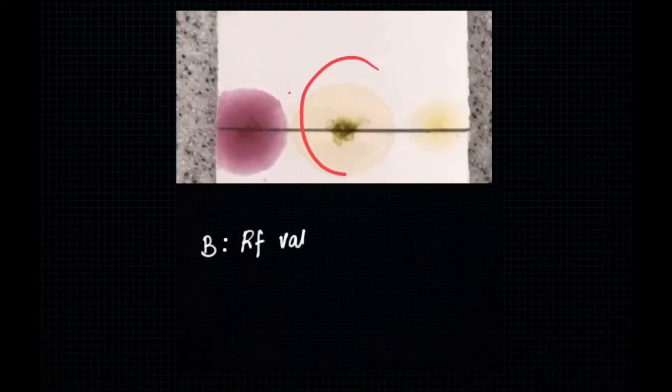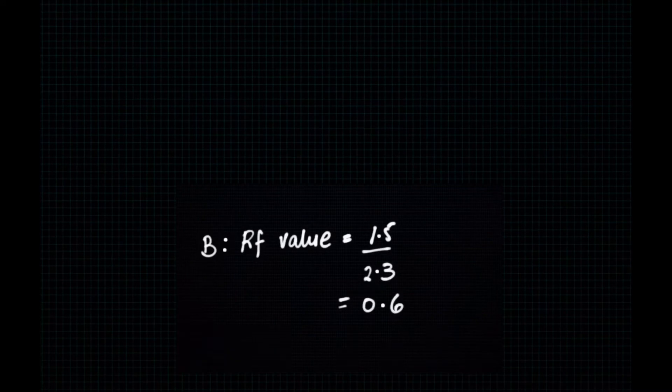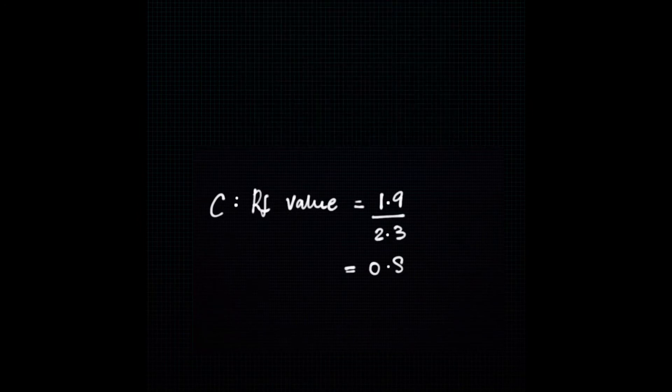B has an RF value of 1.5 over 2.3, which equals 0.65. C has an RF value of 1.9 divided by 2.3, which is 0.83.